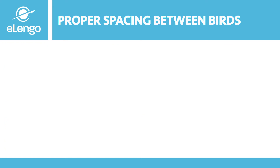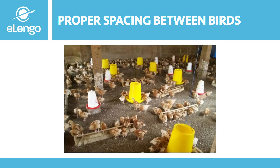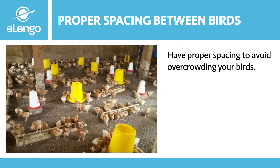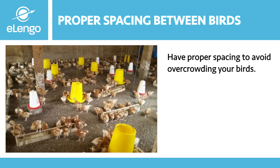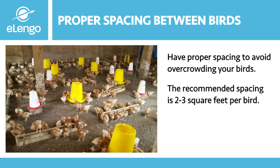Proper spacing between the birds. Avoid overcrowding your birds. This is to reduce the direct contact transmission in the flock when there is a disease, as well as aerosol transmission. Use the recommended spacing of 2 to 3 square feet per bird to ensure that we are not overcrowding our birds in the poultry house.